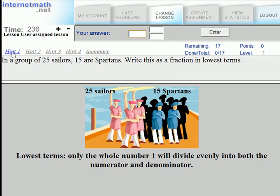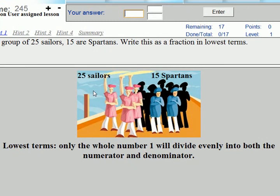If we don't know what to do, we look at hint 1, which shows us an overall picture that the Spartans look different than the rest of the sailors. We also learn what lowest terms means, which is that only the whole number 1 will divide evenly into both the numerator and denominator.